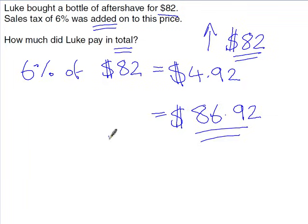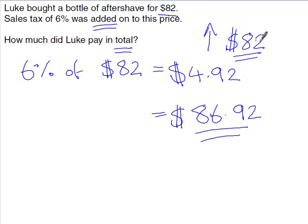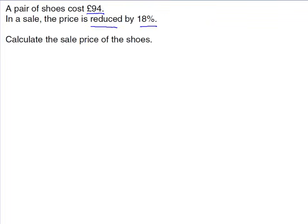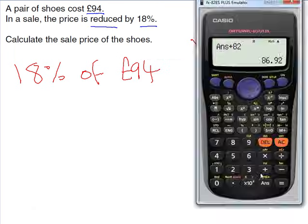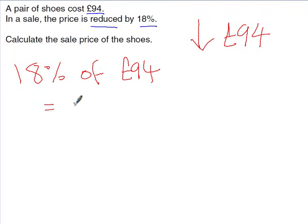A pair of shoes costs £94. In a sale the price is reduced by 18%, so your answer must be less than £94. Work out 18% of 94: enter 18%, times, 94, then press SD. The discount is £16.92.